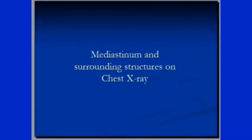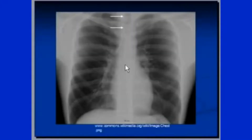In this video we will be learning about mediastinal structures as they are visible on a chest X-ray. In a normal chest X-ray, the trachea should be central to start with.